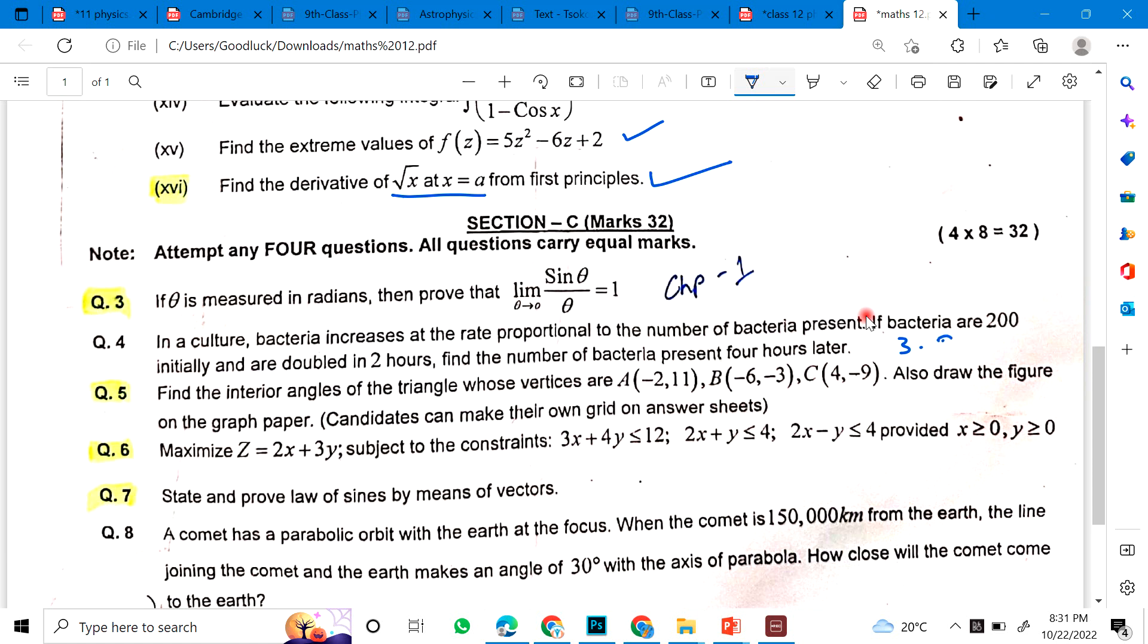This is from 3.9. In a culture equation, culture bacteria increases at the rate proportional to the number of bacteria present. If bacteria are 200 initially and are doubled in two hours, find the number of bacteria present five hours later.